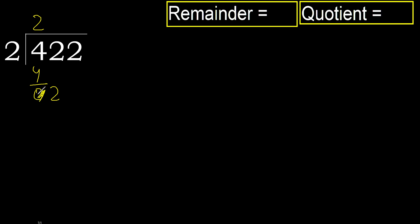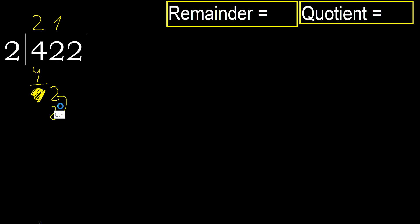Eliminate 0, bring down 2. 2 multiplied by 1 is 2, which is not greater. Subtract: 2 minus 2 equals 0. Next.